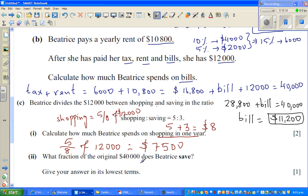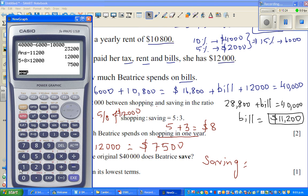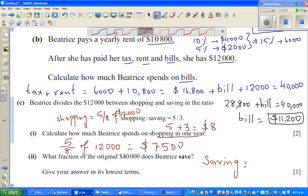What fraction? So how much does she spend on saving? Saving is 3/8 of $12,000 or $12,000 minus $7,500. So from $12,000 you take away $7,500, which is $4,500 is what she spends on saving.